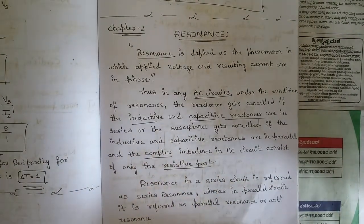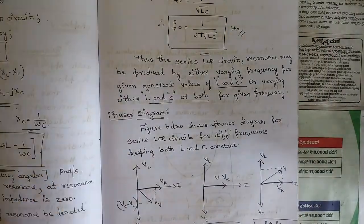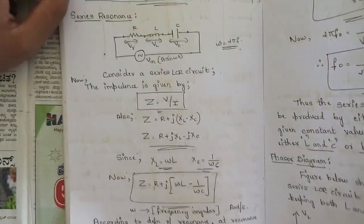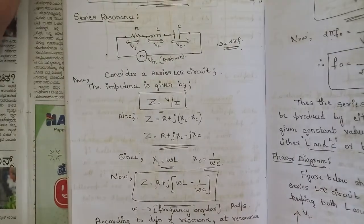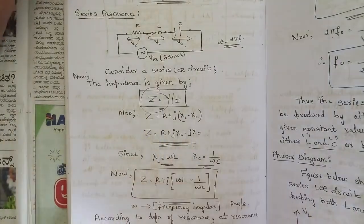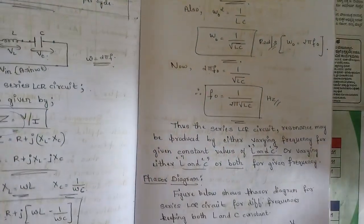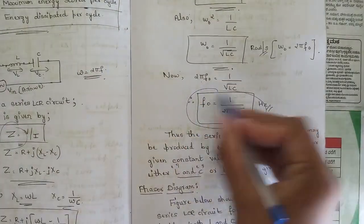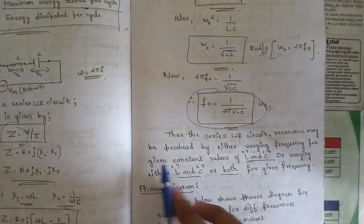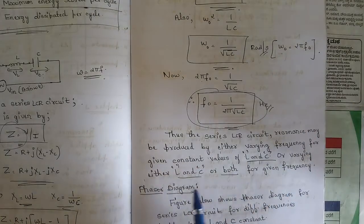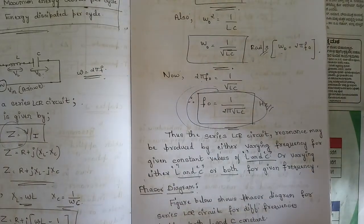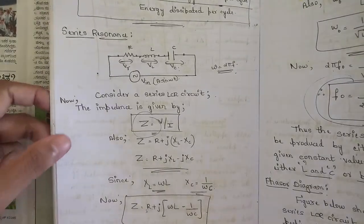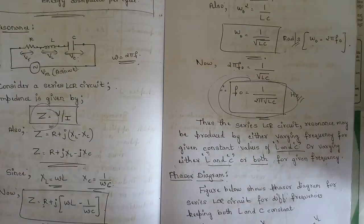From the resonance part, the series resonance derivation is a must question. Derive the resonance frequency for a series RLC circuit using impedance Z = V/I. The final expression obtained for series resonance is f₀ = 1 / (2π√(LC)). Resonance in a series RLC circuit can be produced by varying frequency or by varying L and C at a given constant frequency.